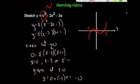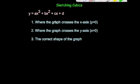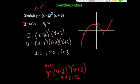So that's how you sketch a cubic graph. Remember: find where it crosses the x-axis by letting y equal 0, factorizing, and solving. Find where it crosses the y-axis by letting x equal 0 and substituting in to find y. Make sure you get the correct shape of the graph. And also, if you have any repeated roots — for example x equals 2 twice — you'll find that the graph touches at that particular point rather than passing through it.